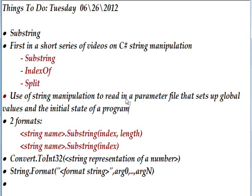There are two basic formats for substring. You take the string name, which is the variable name that's a string, and a dot operator, and then say substring with a start index and a length. The first character in the string will be zero, the fifth character will be four, and so on. The other format of substring is to just have an index without the length, and in that case it takes a substring from the index to the end of the string.